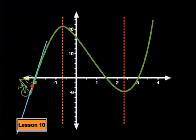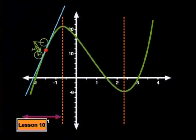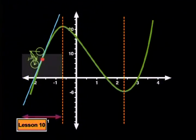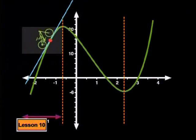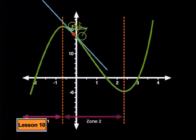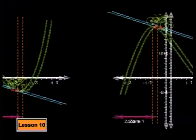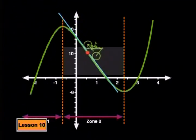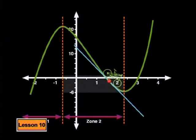I want to go back to the discussion of the bicycle because I think our discussion of what was happening was pretty limited. Up until the point where the function turns, the function is clearly increasing. But in this first half, the function seems to be increasing more quickly than in this second half — the function is not as steep. Having passed the turning point, the function starts decreasing — slowly at first, then quite a bit more quickly, and then it seems to slow down again.